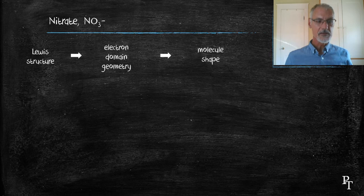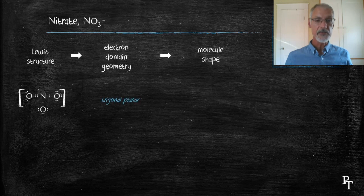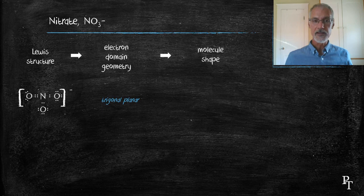Welcome back. There's the Lewis structure you should have come up with three regions, trigonal planar. In this case, every single region is bonded, so I would expect the molecule to also be trigonal planar and the bond angles to be 120 degrees.